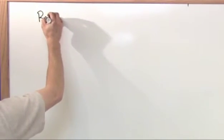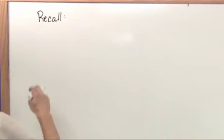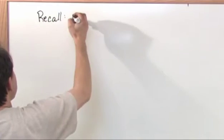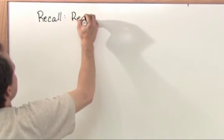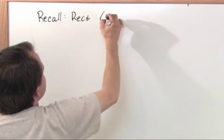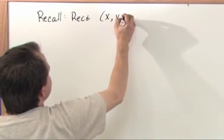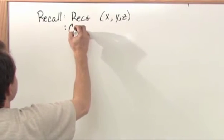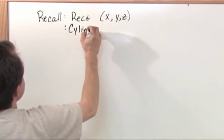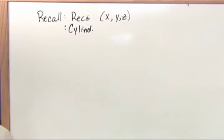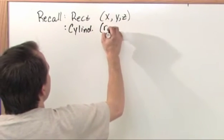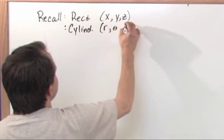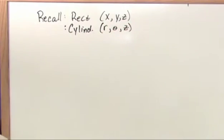Remember from before that for rectangular coordinates you represent the point by x, y, and z. You've been learning this forever. And then in the last section we talked about cylindrical, and that one we use r, theta, z. Three numbers again because it's three dimensional space.